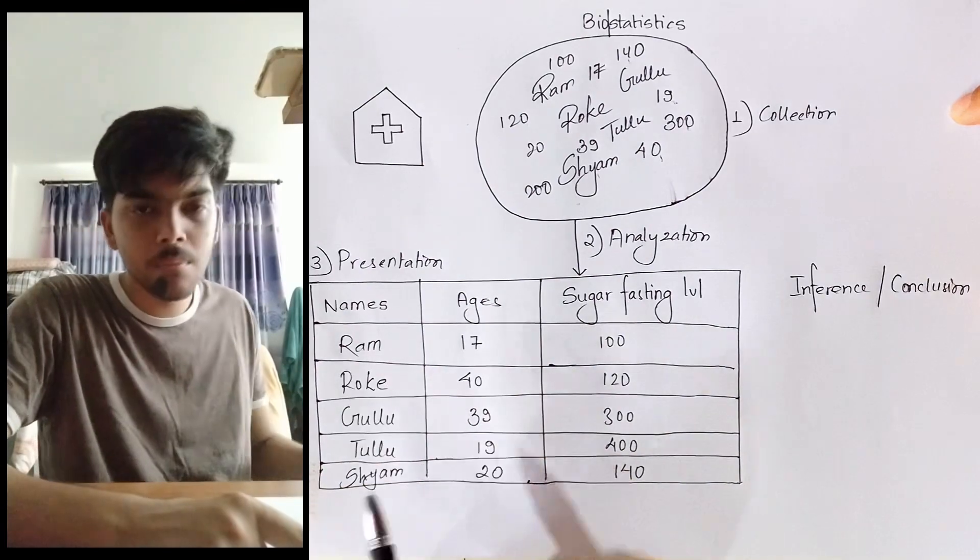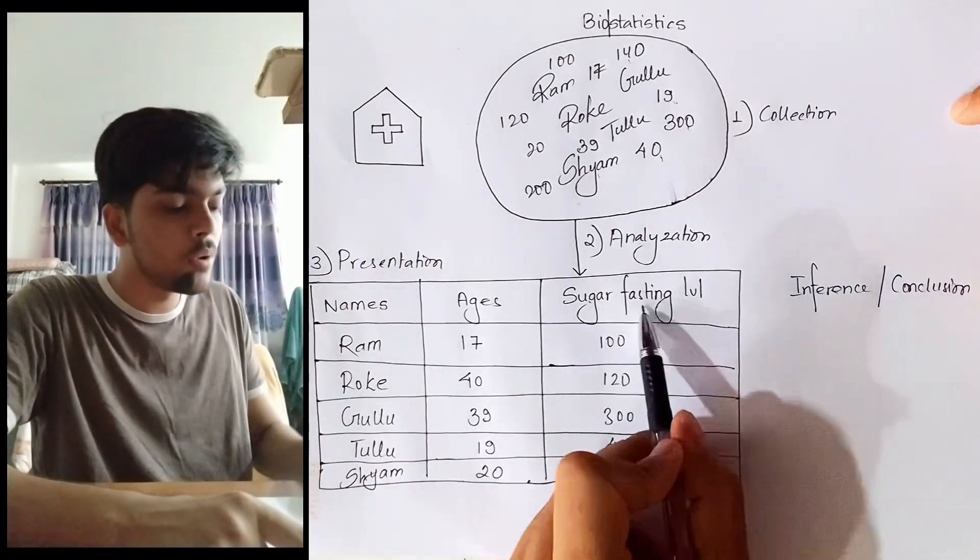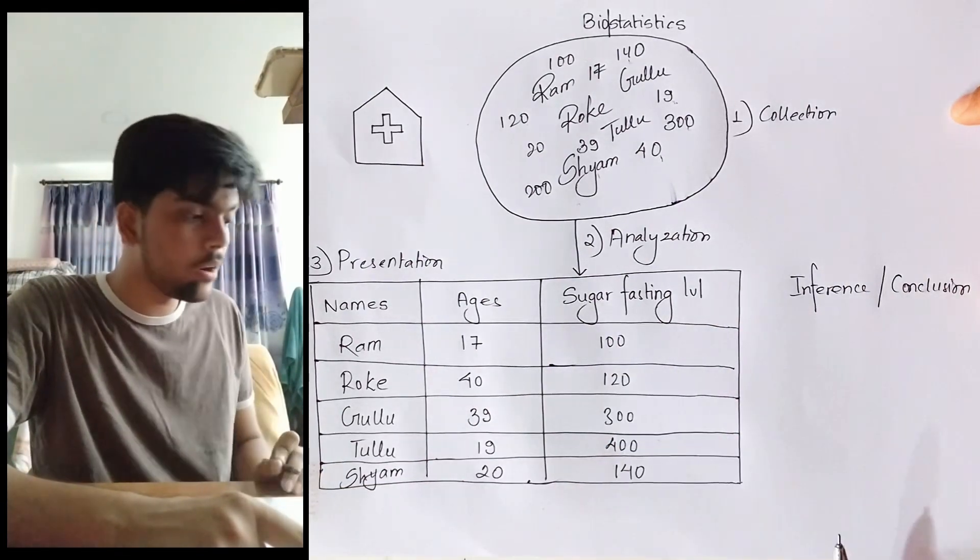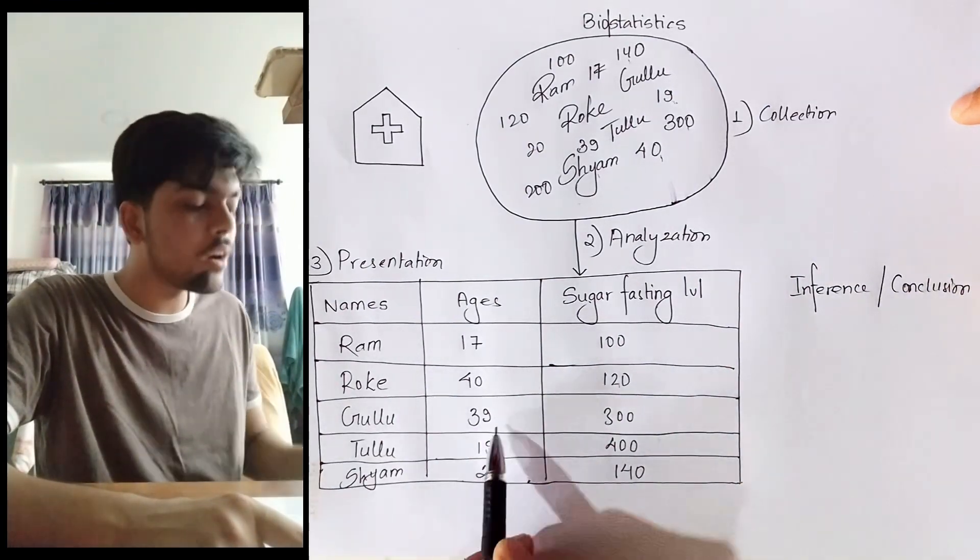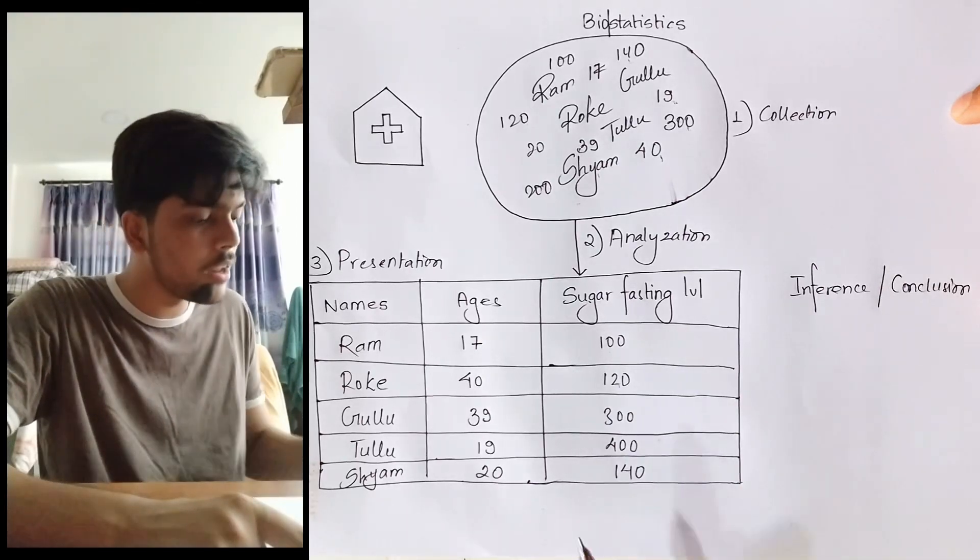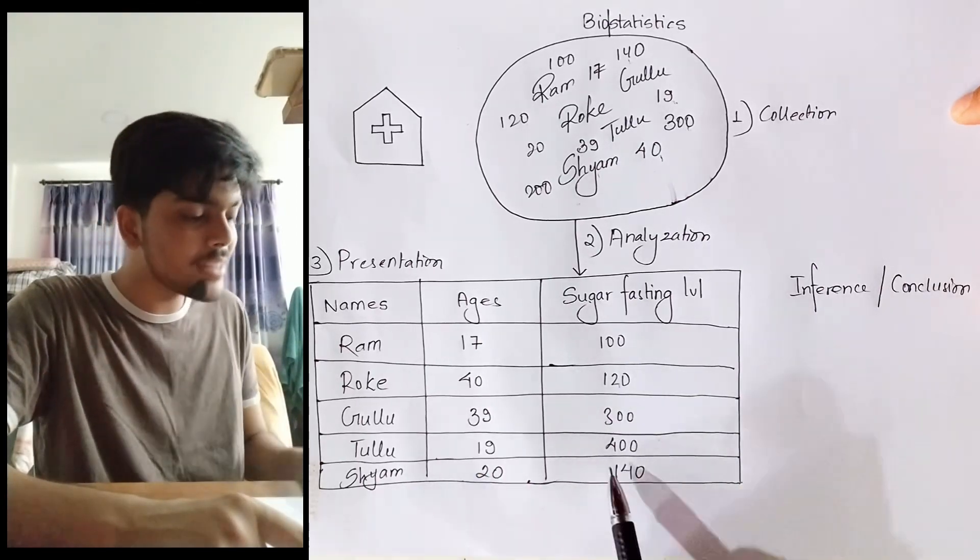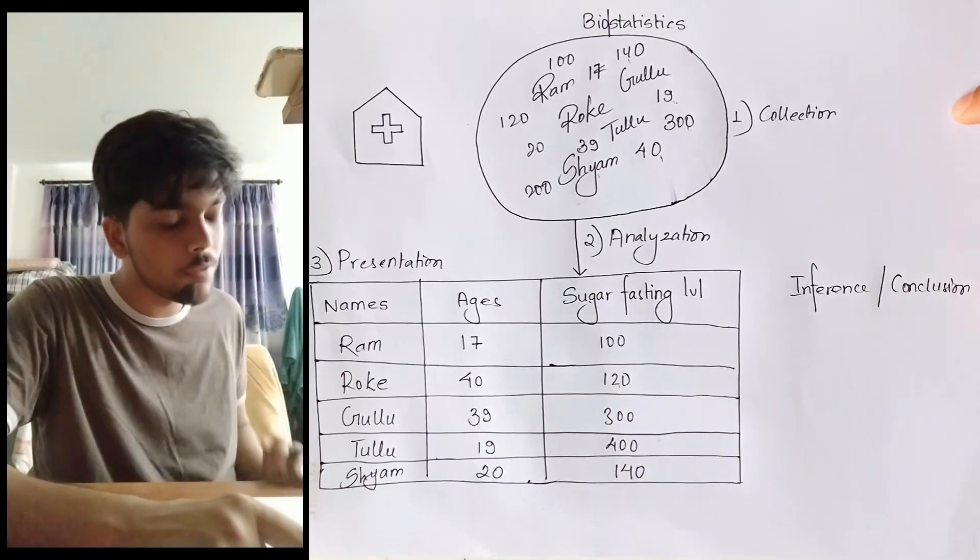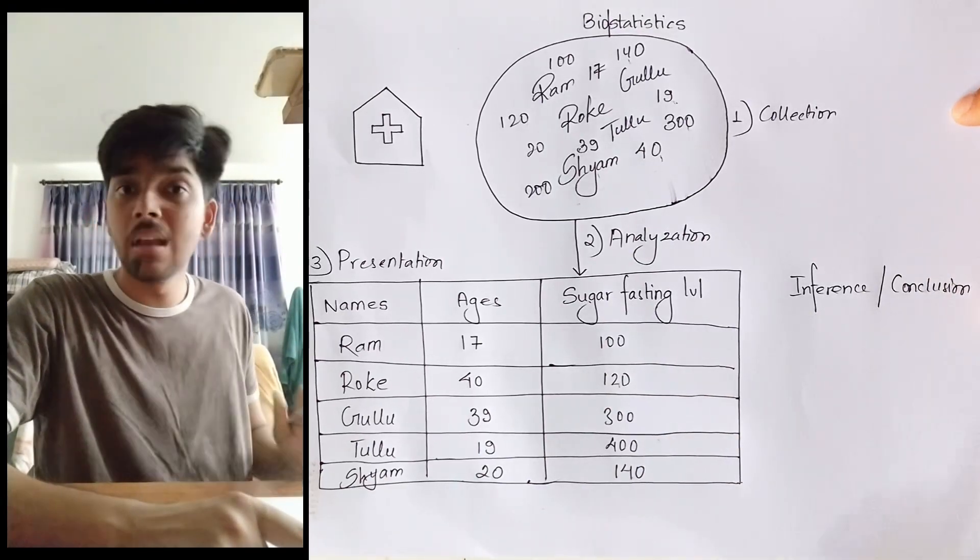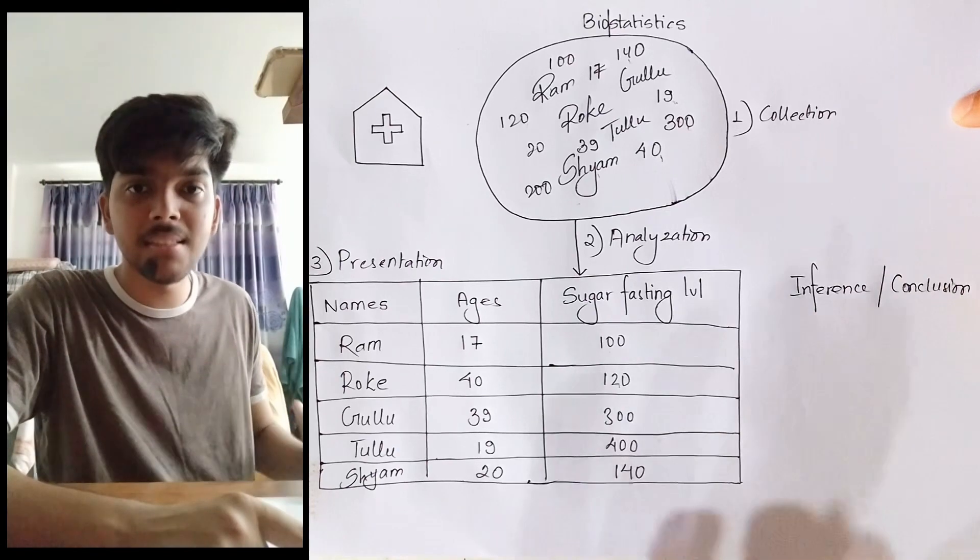Now we know the name of the people, the age of those people, and the sugar fasting level of those people. For example, Ram of age 17 has sugar level fasting 100, Roke of age 40 has sugar level fasting 120, Gullu of age 39 has 300, Tullu of age 19 has 400, and Sam of age 20 has 140. Now all of this makes sense.